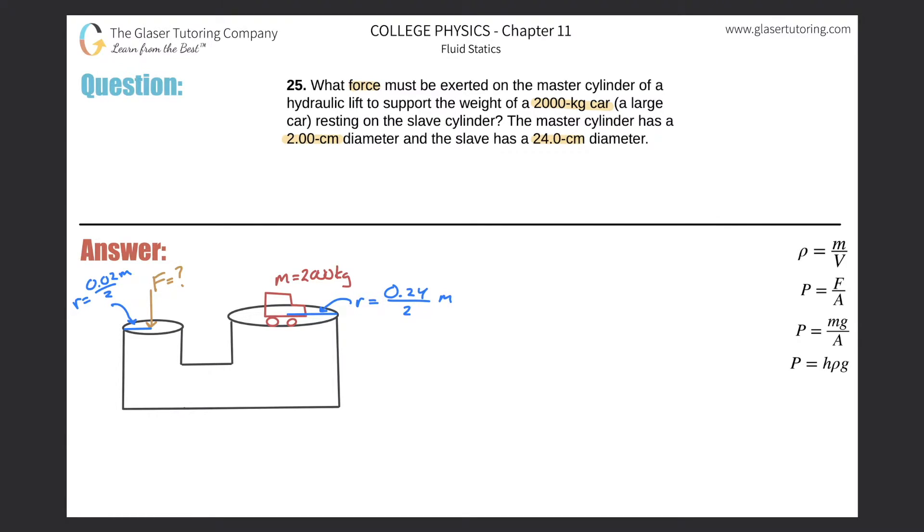All right, so here's the picture. We need to find the force applied to the master cylinder. The diameter they told us was two centimeters—I already converted that into meters and divided it by two because the radius is what is important. On the slave cylinder over here we have a car mass of 2,000 kilograms, and again I did the same thing, converted that into meters and then found the radius.